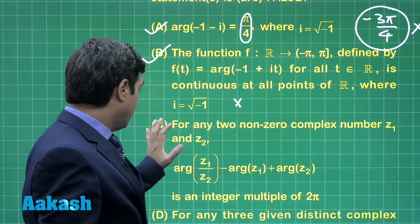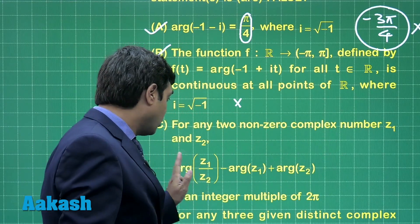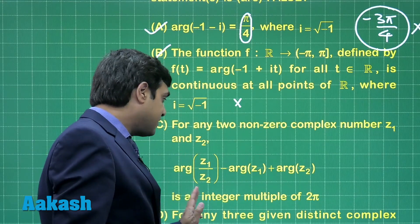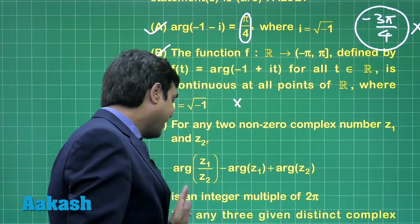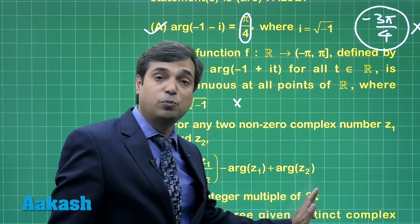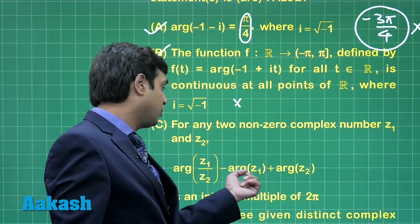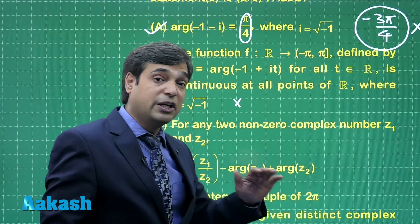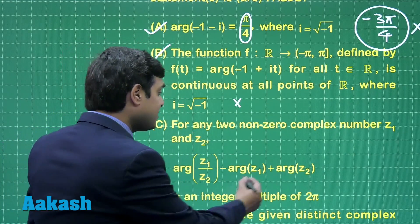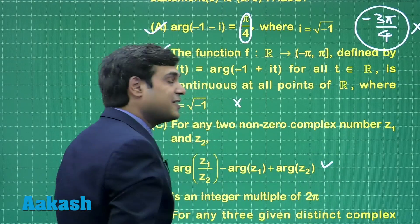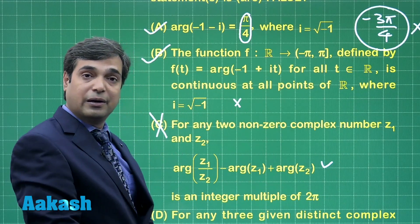Third, for any two non-zero complex numbers z1 and z2, argument z1 by z2 minus argument z1 plus argument z2 is an integral multiple of 2 pi. Yes, this is clearly correct because when you convert it into the form of z1 by z2, you will find it as plus 2k pi where k is any integer. This statement is true. This statement is true means this is not the required option.